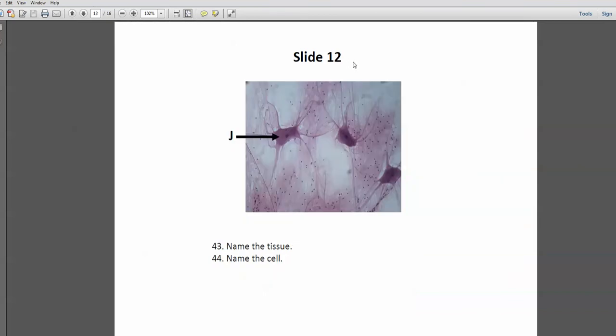Slide 12, easiest to identify tissue in the world. We have the star-shaped cells. Has to be nervous tissue.